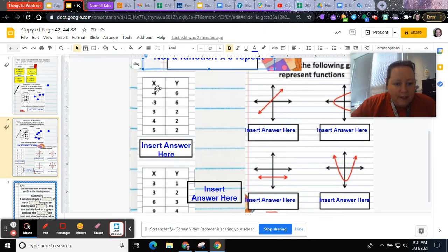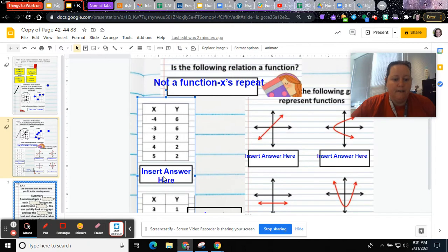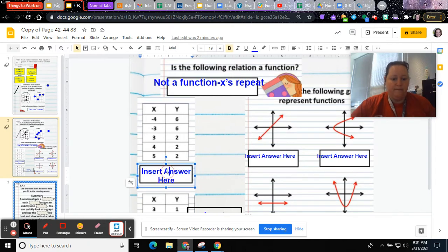When you look here, you only have to look at the x values: negative 4, negative 3, 3, 4, 5. None of those repeat. Since none of those repeat, it is a function.